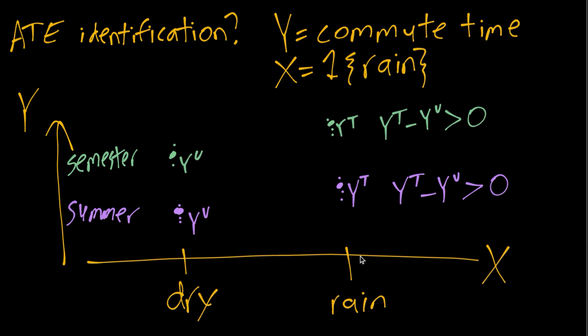The problem is that here in Columbia it rains more in the summer than during the semester. To make it more clear, we'll make it a little more extreme. We could imagine it only rains during the summer and it never rains during the semester.